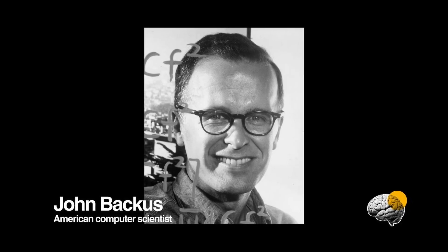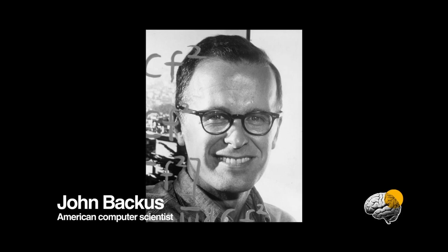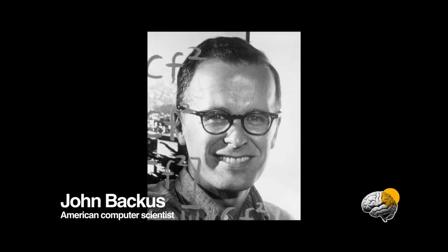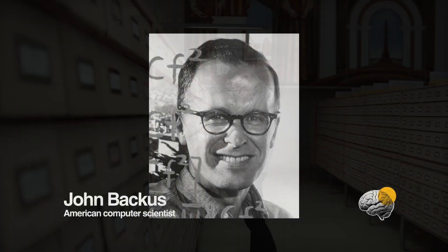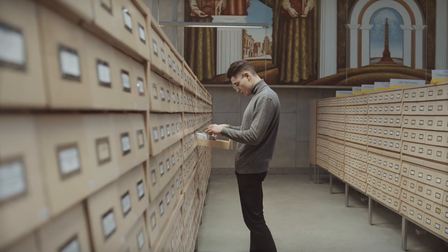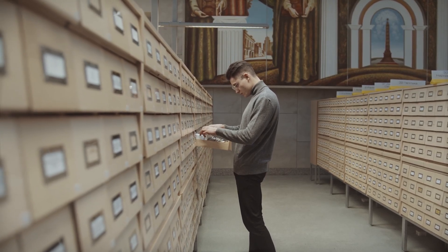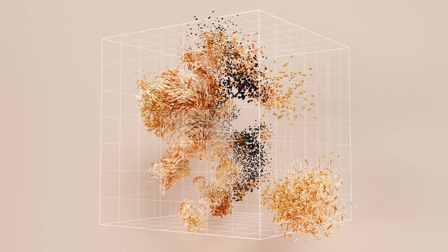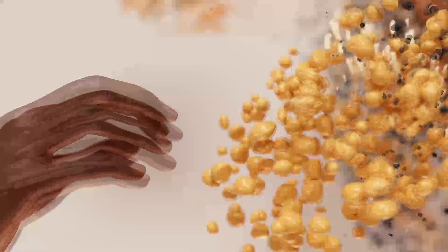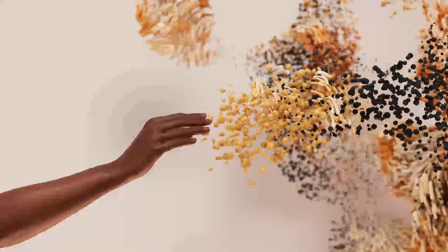On one of those gray mornings, a quiet rebel named John Backus stood with a simple, heretical claim in his pocket. He believed that mathematics could be written once, in something that looked like human thought, and then be translated into the lightning dialect of the machine without losing its soul. He called the dream formula translation. The rest of us would learn to whisper it as FORTRAN.